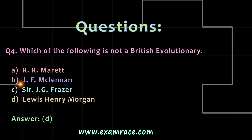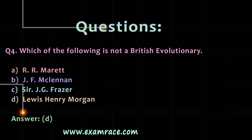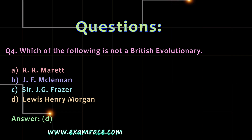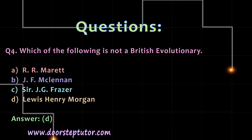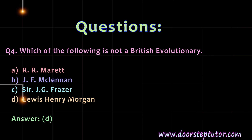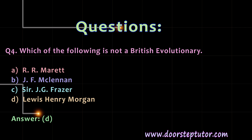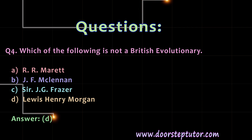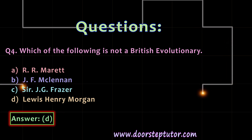Question 4: which of the following is not a British evolutionary philosopher? A. R.R. Marriott. B. J.F. MacLennan. C. Sir J.G. Fraser. D. Lewis Henry Morgan. The correct answer is D, Lewis Henry Morgan.